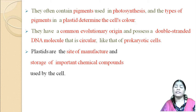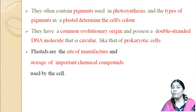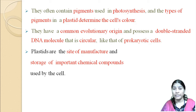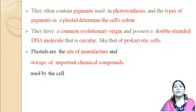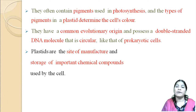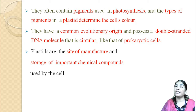Plastids possess a double-stranded DNA molecule which is circular, similar to mitochondria. Both plastids and mitochondria share a common evolutionary origin, similar to that of prokaryotic cells.